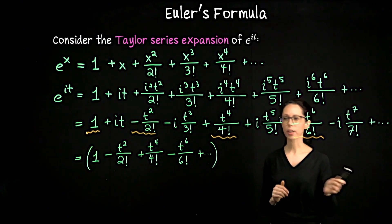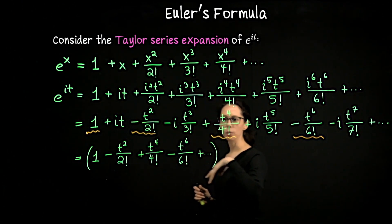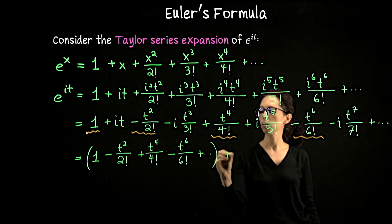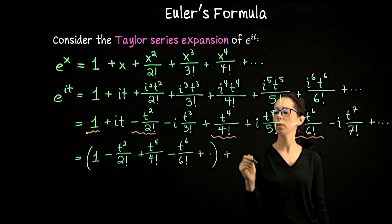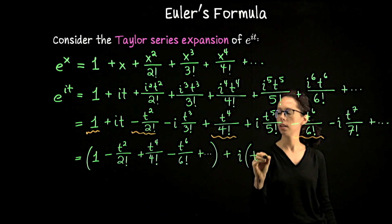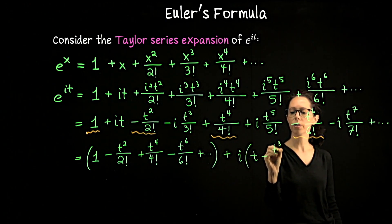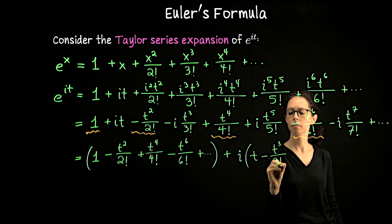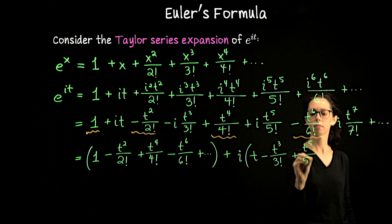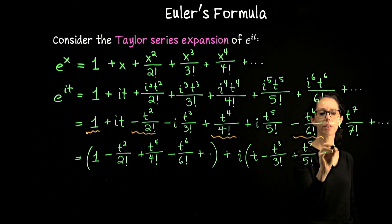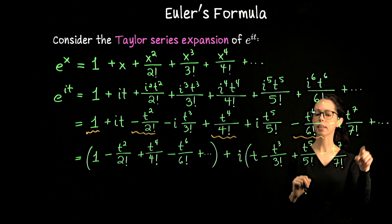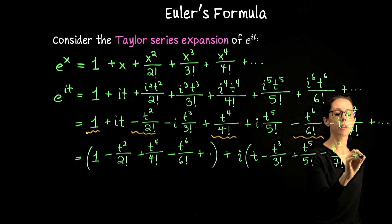Now let's collect the imaginary terms. We're left with it minus it cubed over 3 factorial plus the 5th order term minus the 7th order term. Pulling out the i in front, we write i times the quantity t minus t cubed over 3 factorial plus t to the 5th over 5 factorial minus t to the 7th over 7 factorial. The next term would be plus t to the 9th over 9 factorial.